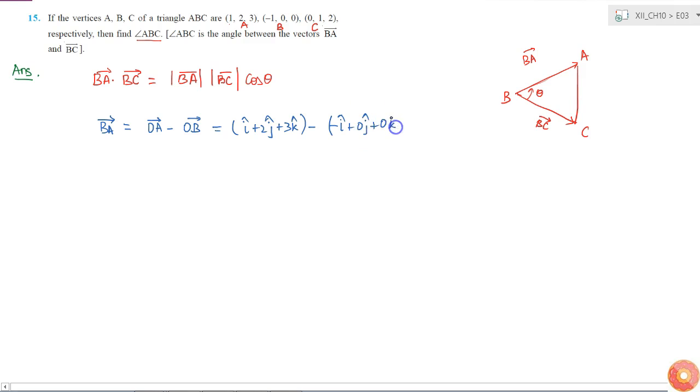This equals 2i cap plus 2j cap plus 3k cap. So we got BA vector. This is our BA vector.